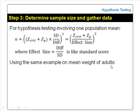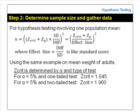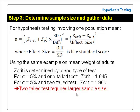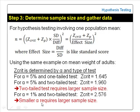We will use the same example on mean weight of adults. Z-critical is determined by the level of significance, alpha, and the type of test — whether it is one-tailed or two-tailed. For alpha equal to 5% and a one-tailed test, Z-critical is 1.645. For a two-tailed test with the same alpha of 5%, Z-critical is 1.96. From the formula, we can see that a two-tailed test requires a larger sample size than a one-tailed test. For a two-tailed test with a smaller alpha of 1%, Z-critical is 2.576. Similarly, we can see that a smaller alpha requires a larger sample size.